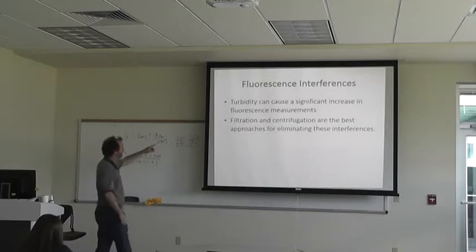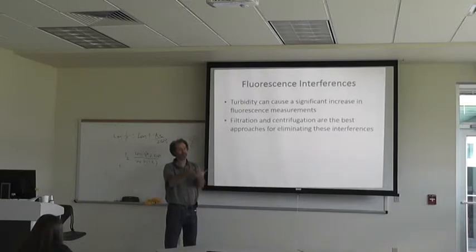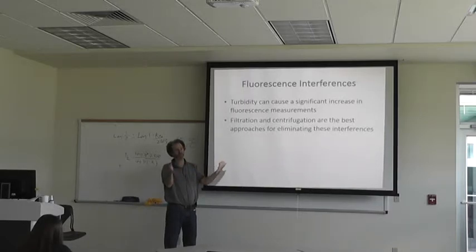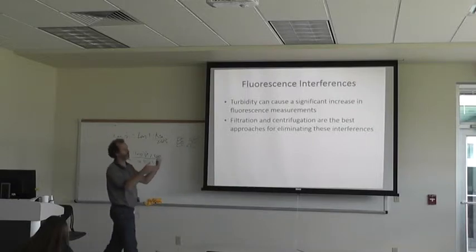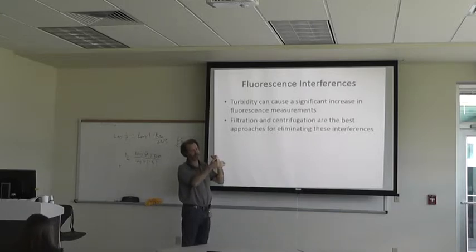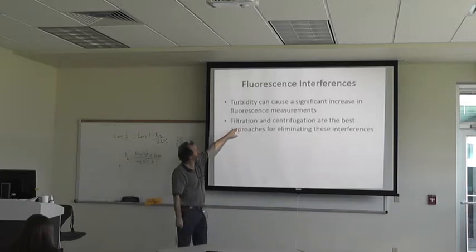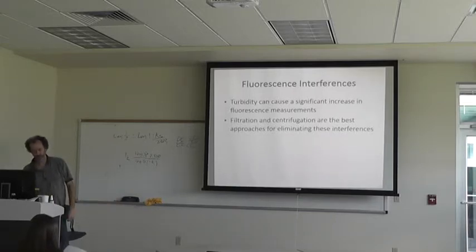Fluorescence interferences: turbidity can cause a significant increase in fluorescence measurements, because you're shining light to excite the fluorophore and then measuring the amount of light emitted at a 90-degree angle, typically. This is similar to nephelometry — in nephelometry you're actually looking for that scatter. But you don't want the light to scatter to the fluorescence detector; you want it to fluoresce from the fluorophore. Filtration and centrifugation are the best approaches for eliminating lipemic or turbid samples.